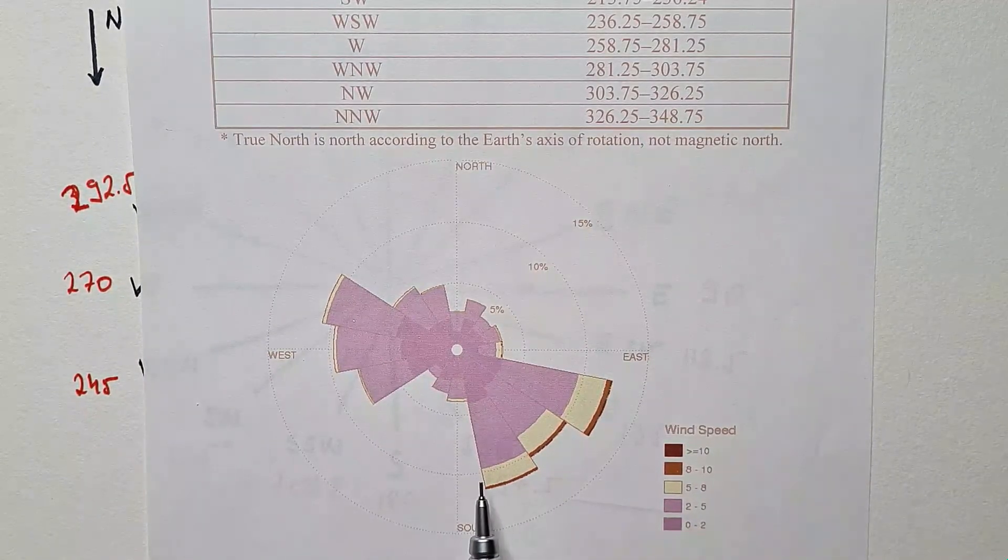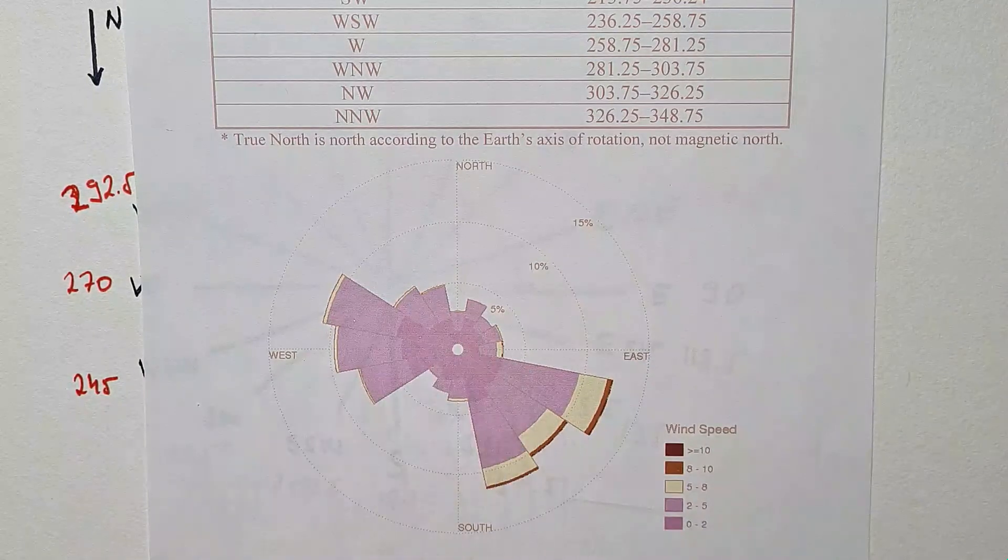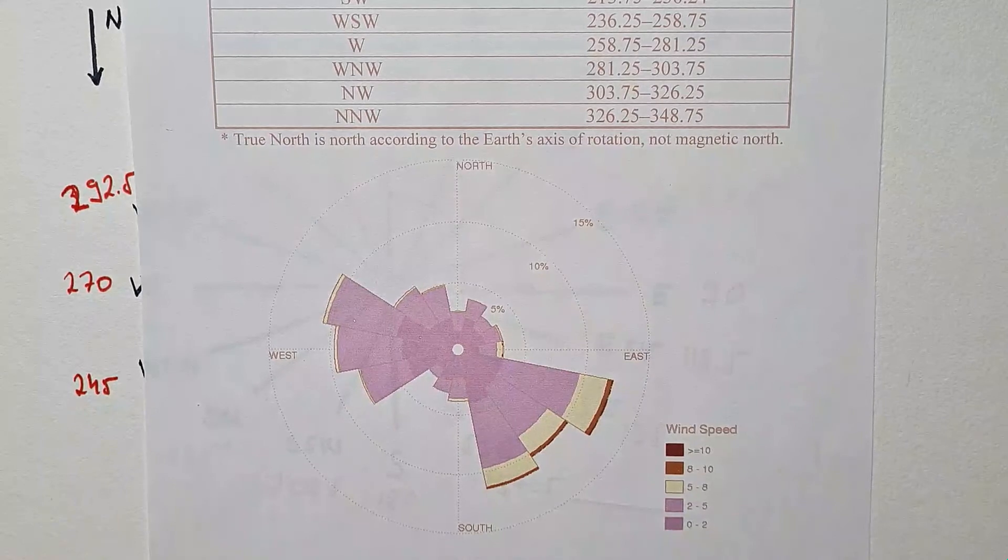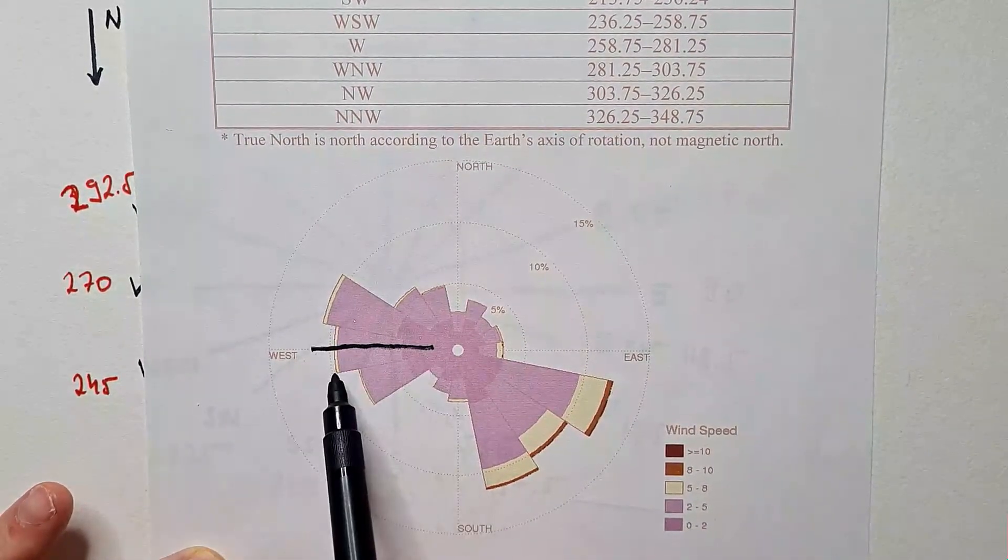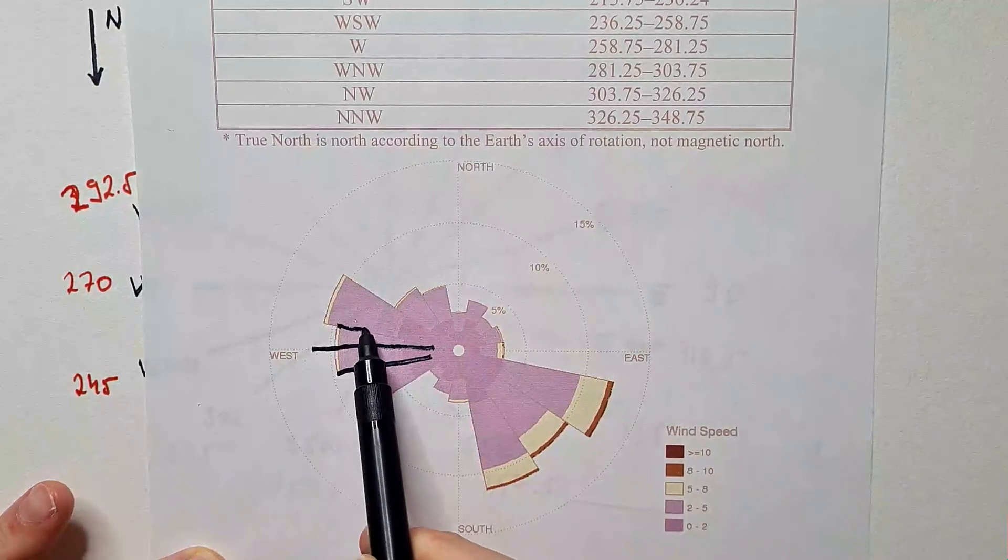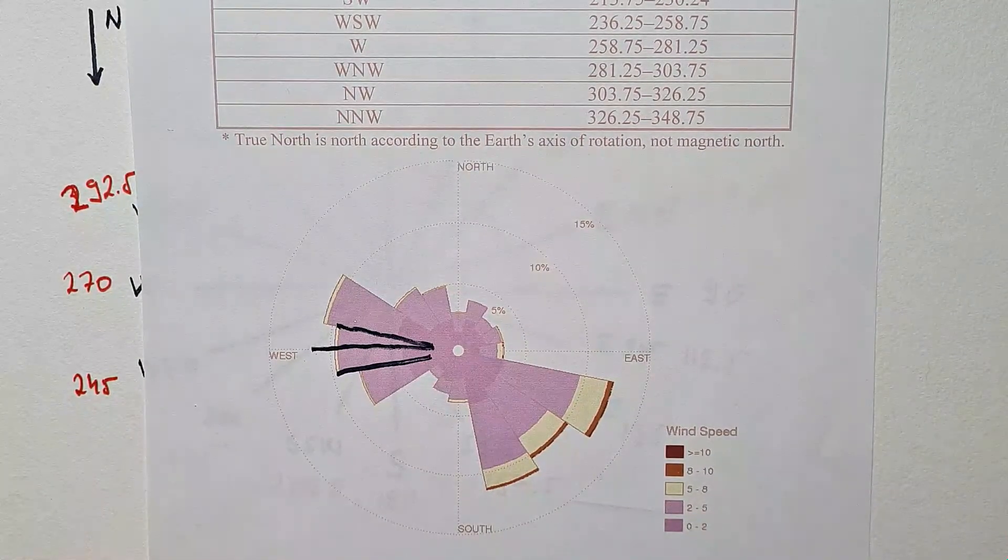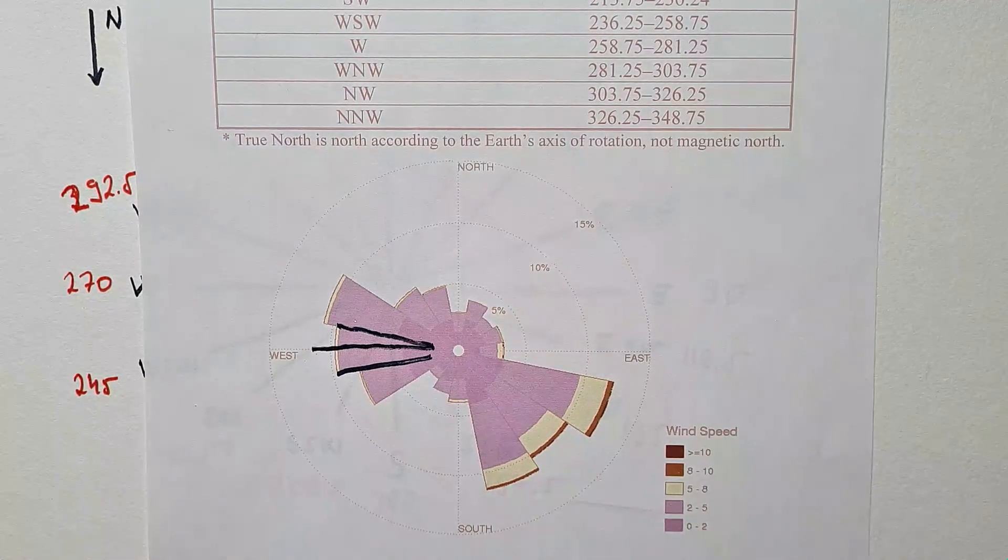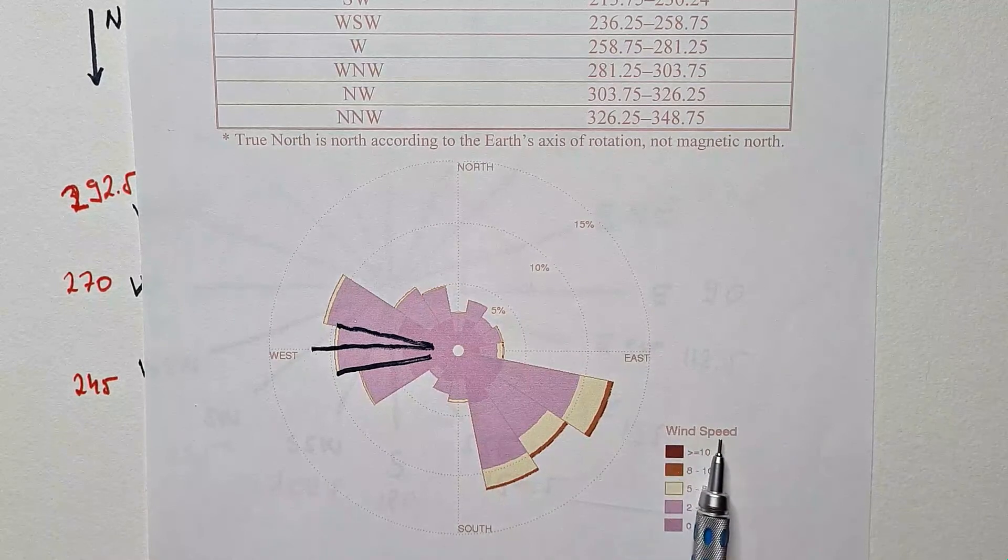here we see directional sectors associated with cardinal wind direction. So, for example, this would be cardinal wind direction for west. And you can see the width of the sector associated with that cardinal wind direction. But,